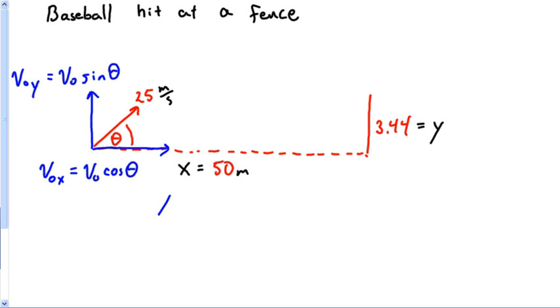I'm looking for that theta. It gave me an X, so the first thing that pops in my head is that X equals VOX times t. And then it gave me a Y value, so Y is equal to VOY t plus one-half at squared.